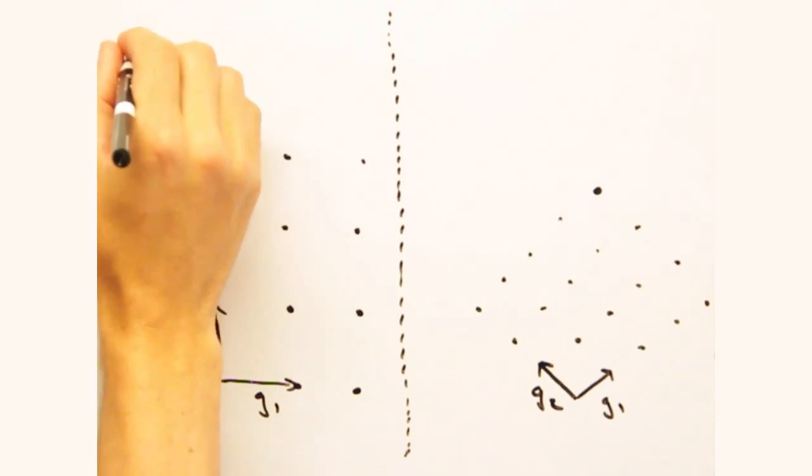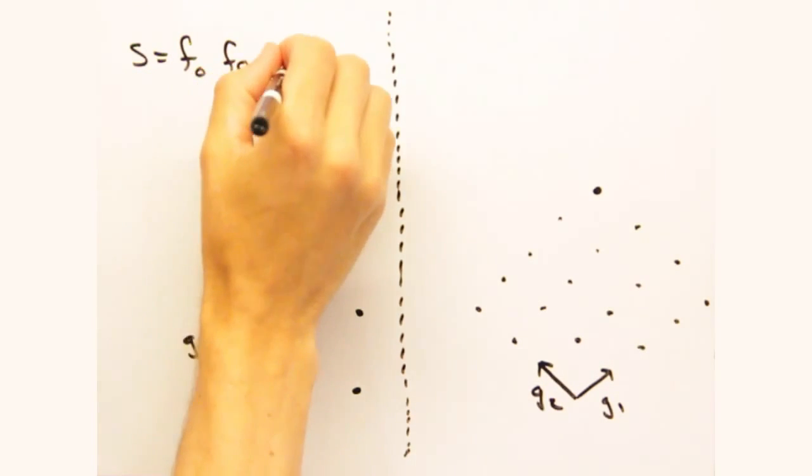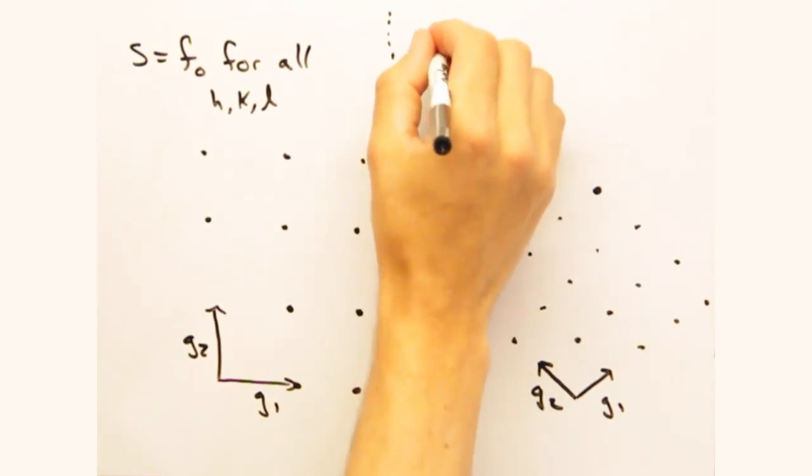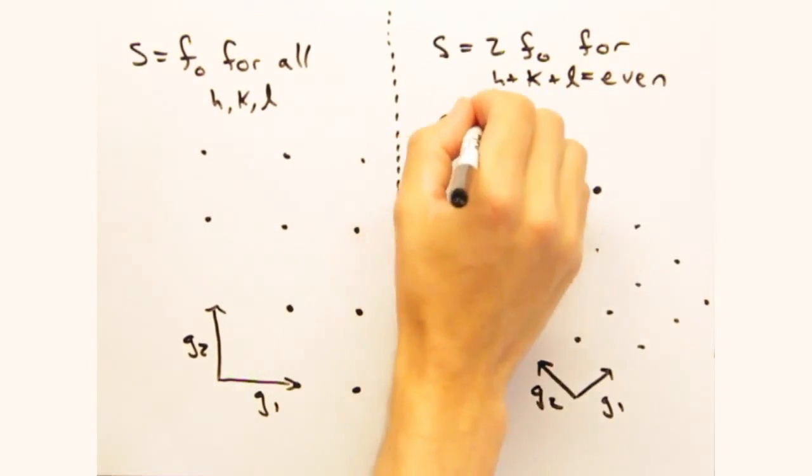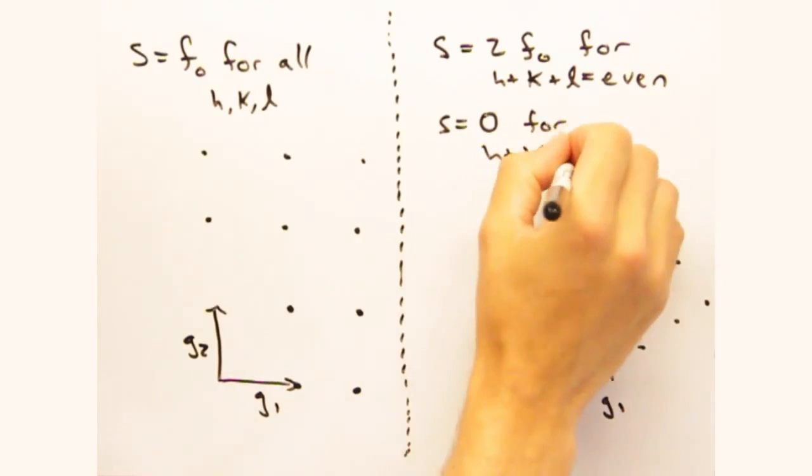For the normal square cell with one atom at each lattice point, we found that the structure factor s equals f0 at all hkl, so that we should observe peaks at every lattice point as shown by the x.